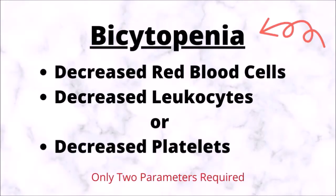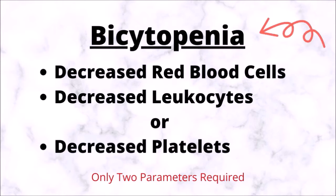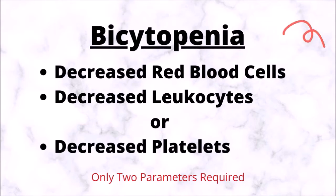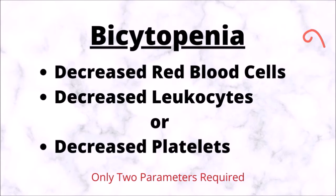Bicytopenia is the condition in which there is a reduction in the number of two parameters of the complete blood count. Bicytopenia occurs when two of the following three parameters decrease: the number of red blood cells, the number of leukocytes, or the total amount of platelets.